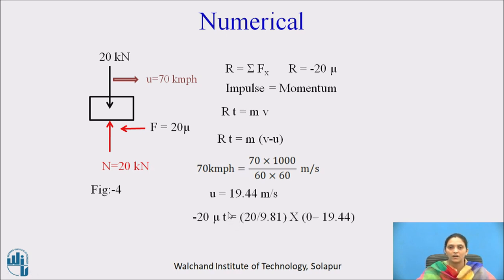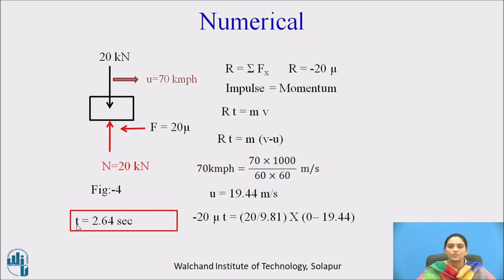Substituting all values into the impulse-momentum equation: −20μ·t = (20/9.81) × (0 − 19.44). With μ = 0.75, solving for t gives t = 2.64 seconds. So after applying the brakes, with an initial velocity of 70 km/h, the vehicle takes 2.64 seconds to stop completely.